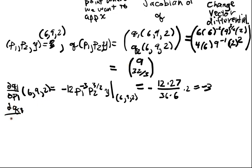DQ1/DP2 of 6, 9, 2. That should be 6P1^(-2), we're skipping the differentiation because it's essentially polynomial differentiation and we should know how to do that, P2^(1/2) Y. Evaluate at 6, 9, 2. Ultimately, if you evaluate this, you should acquire 3/2.